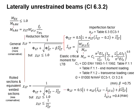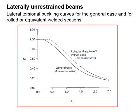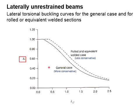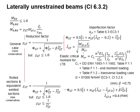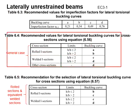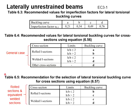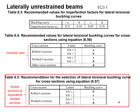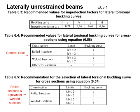This will give you a less conservative value. As given in this table, the χ_LT for the general case are always less than the χ_LT obtained from the rolled and equivalent welded case. Next, we discuss how do we get the imperfection factor. It is by referring to Table 6.3, 6.4, and 6.5 in Eurocode. 6.4 is meant for the general cases, while 6.5 is meant for the rolled section and equivalent welded section.